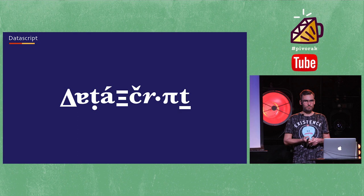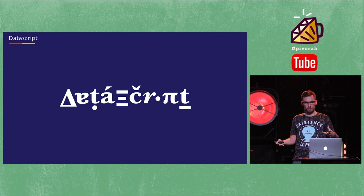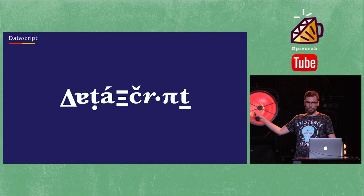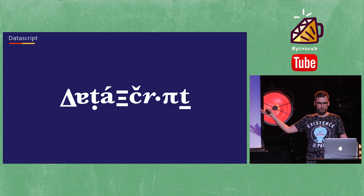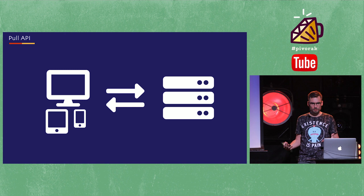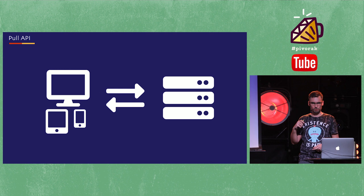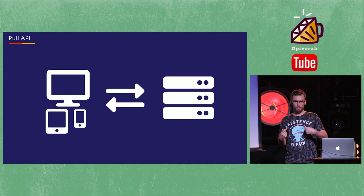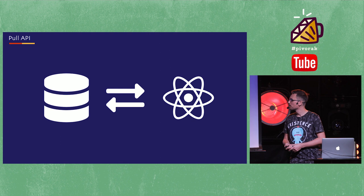Datascript is all this stuff I've been talking about but designed for web applications in JavaScript — it runs on the JavaScript engine. Basically you can replace all of your React state management with just one simple database that lets all React components do arbitrary queries. The Pull API is how we communicate between front-end and back-end. We also have an extension called EQL — Entity Query Language — which talks about a syntax for doing mutations, just like GraphQL lets you do mutations and reads.